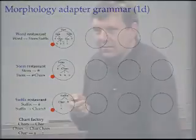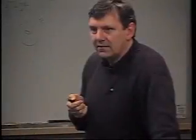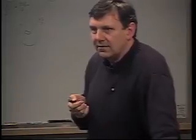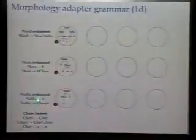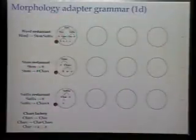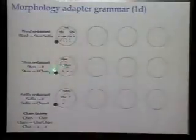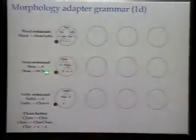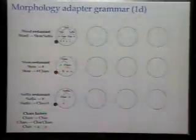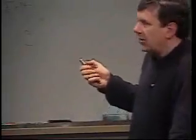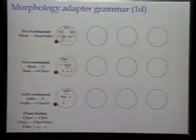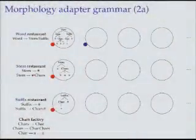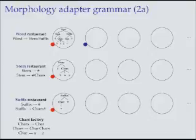Are the stem and suffix restaurants specific to the word, or are they a single model? They're single models. The key idea is that they can be shared between multiple words — that sharing is what causes concentration on certain stems and certain suffixes. If they weren't shared, there would be no commonality between the stems.